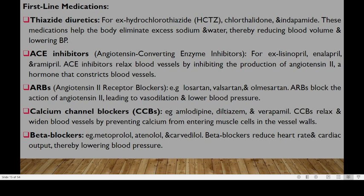Next we have ARBs — angiotensin II receptor blockers, commonly referred to as the sartans, for example losartan, valsartan, and olmesartan. These sartans block the action of angiotensin II, leading to vasodilation and lower blood pressure. We also have calcium channel blockers, like amlodipine, diltiazem, and verapamil. Calcium channel blockers normally relax and widen blood vessels by preventing calcium from entering muscle cells in the vessel walls. Lastly, we have beta blockers, like metoprolol, atenolol, carvedilol, and labetalol — the 'lols.' Beta blockers reduce heart rate and cardiac output, thus lowering blood pressure.